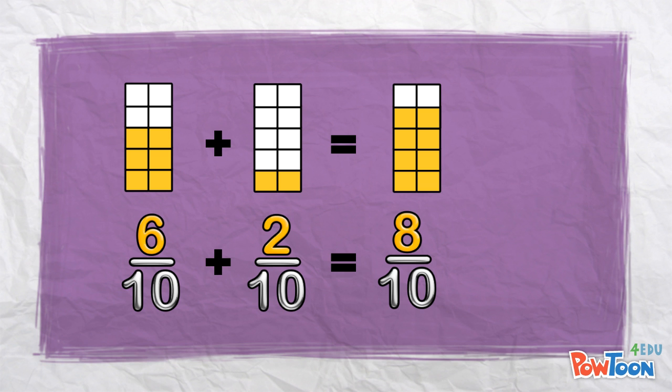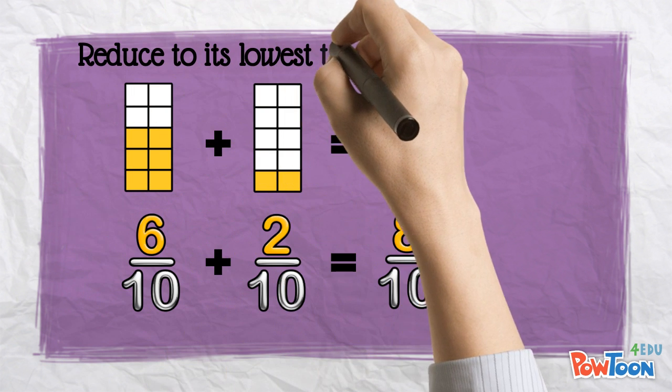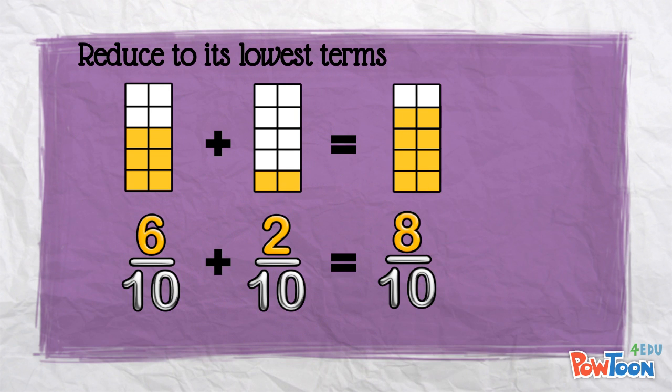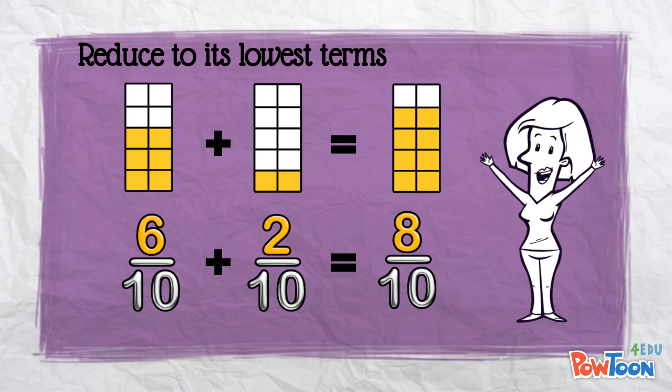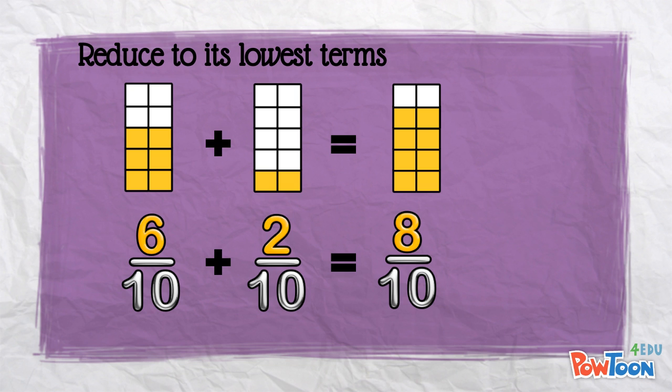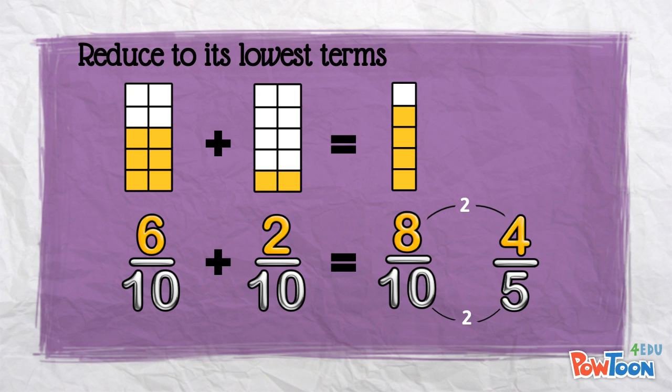But then I want you to reduce your fraction to its lowest terms. If you've watched my other films on fractions so far, you'll know what to do here. 8 and 10 are both even numbers, so they can be divided by 2. I can simplify this fraction. And when you divide top and bottom by 2, you get 4 over 5.